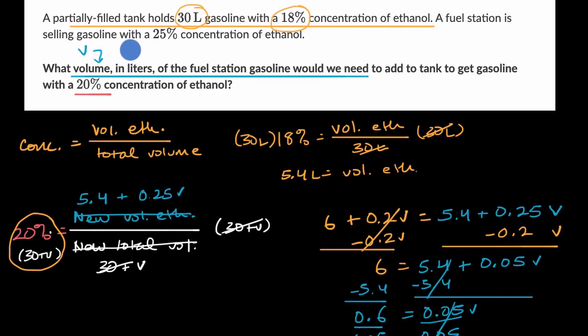And we are done. And if you want, you can verify the new concentration, when I add 12 liters of this concentration to the 30 liters of that concentration, you can verify that I now have a 20% concentration of ethanol.